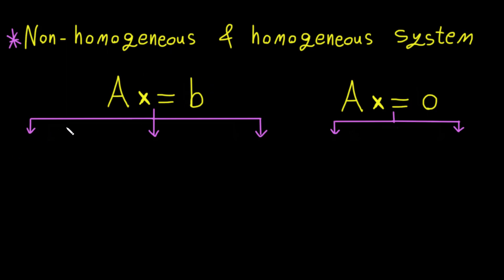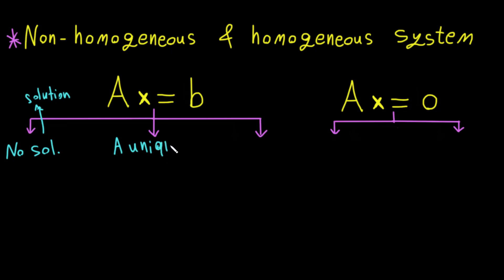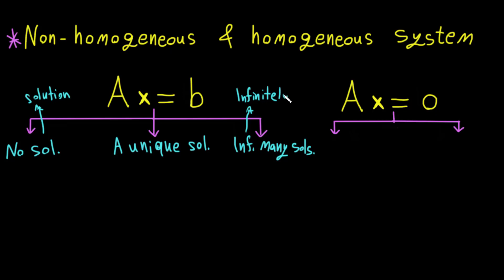A non-homogeneous system might have no solution, it might have a unique solution, or it might have infinitely many solutions. For the homogeneous system, however, we have only two choices: either a unique solution or infinitely many solutions.